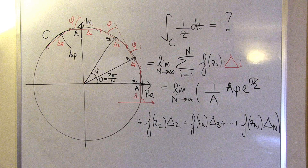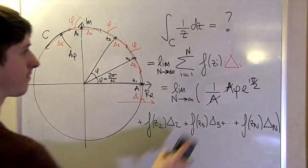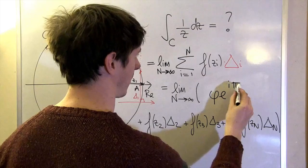Seems like we can cancel the a's out, so the first term is equal to phi times e to the i pi over 2.